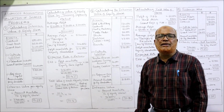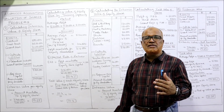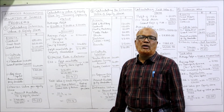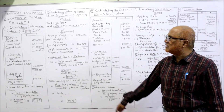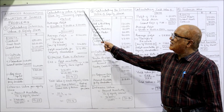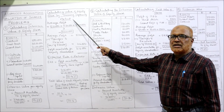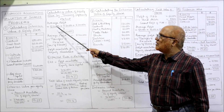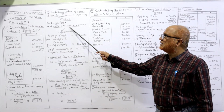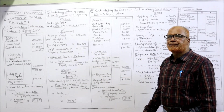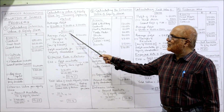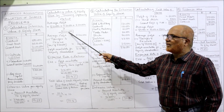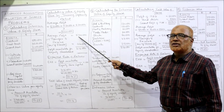Half of the problem completed. Now remaining half is calculating the yield value or earning capacity method. Average profit — last 3 years profits are given: 5 lakh 10,000; 5 lakh 30,000; 5 lakh 20,000. So we take the average profit. Add up these 3, divide by 3 — you get 5 lakh 20,000. This is the average profit.